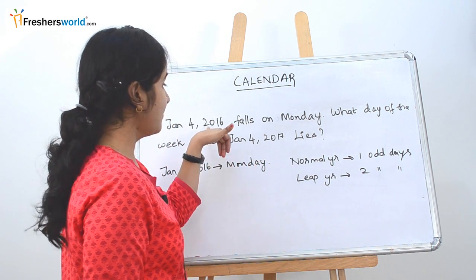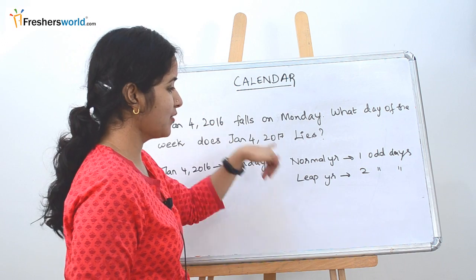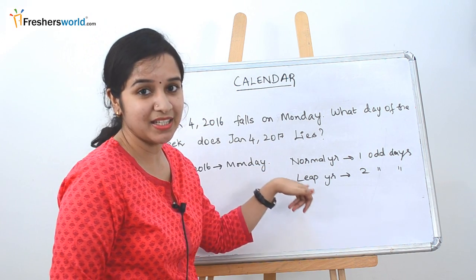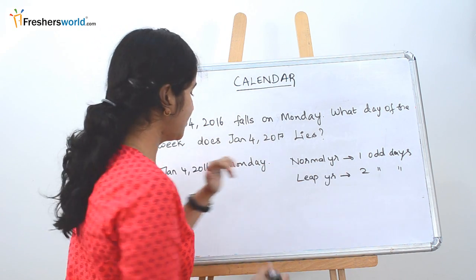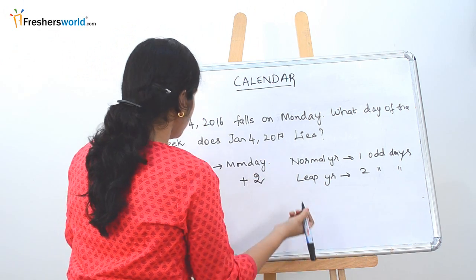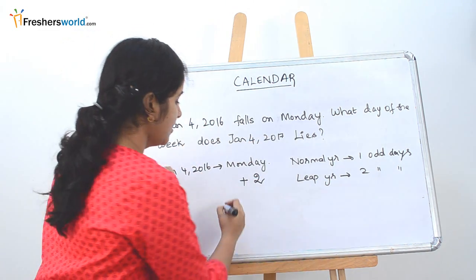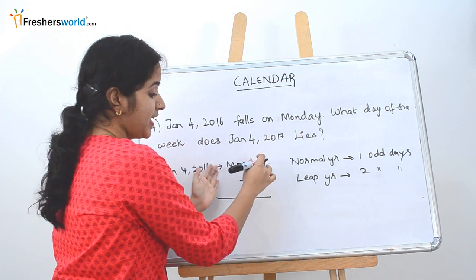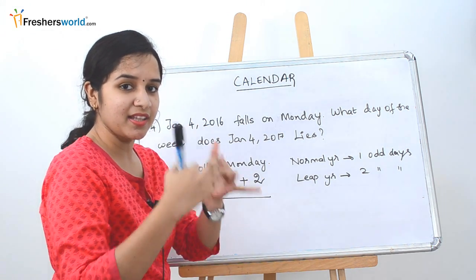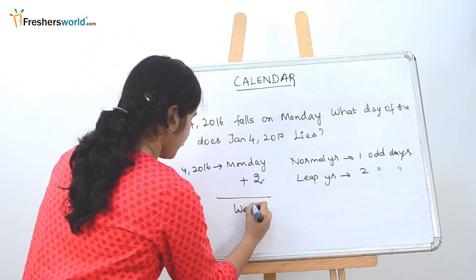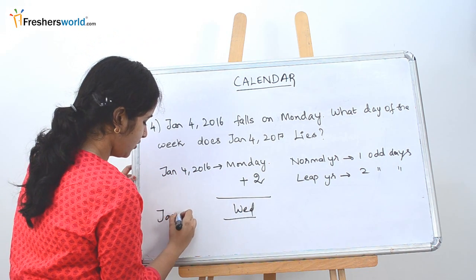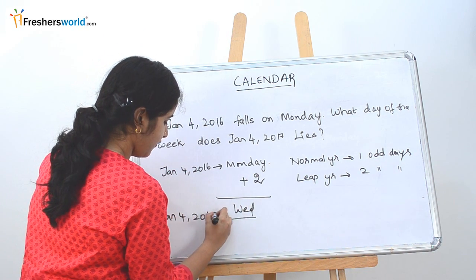So Feb will be falling on 2016 where you will have an extra two days because it's a leap year. So it will be plus 2 here. So obviously the Jan 4, 2017 following that year will definitely fall on Monday plus 2 which is nothing but Tuesday. Then Wednesday. So Jan 4, 2017 will fall on a Wednesday.